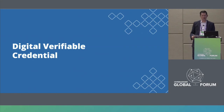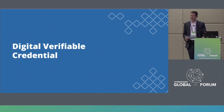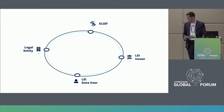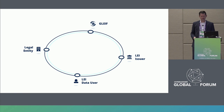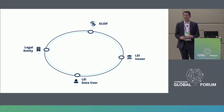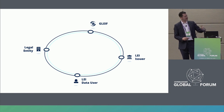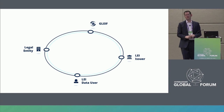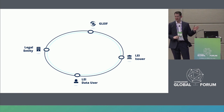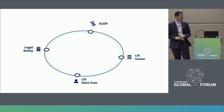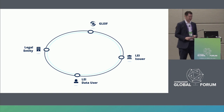Let us look in more detail at how this chain of trust works by exchanging digital verifiable credentials. At the top of the slide, we have GLEIF, the Global LEI Foundation, who does the governance and operational management of the LEI system and accredits so-called LEI issuers. We have 34 of them providing global coverage — wherever you are on the planet with a legal entity, you can get an LEI from at least one of those organizations. On the other side are the legal entities, the owners of LEIs — currently about one and a half million of them. At the bottom is the LEI data user who wants to consume the LEI data, the reference data, and identify legal entities.